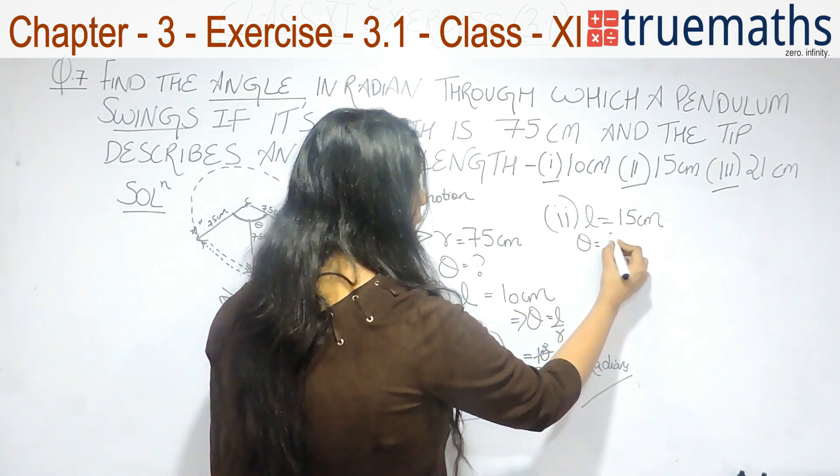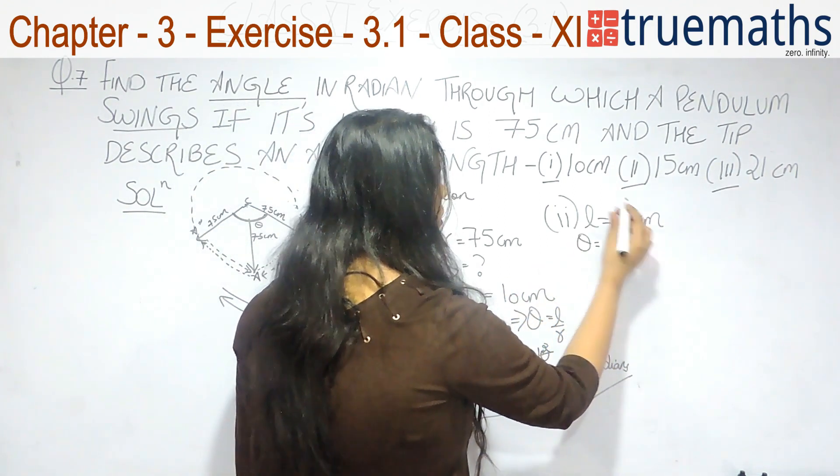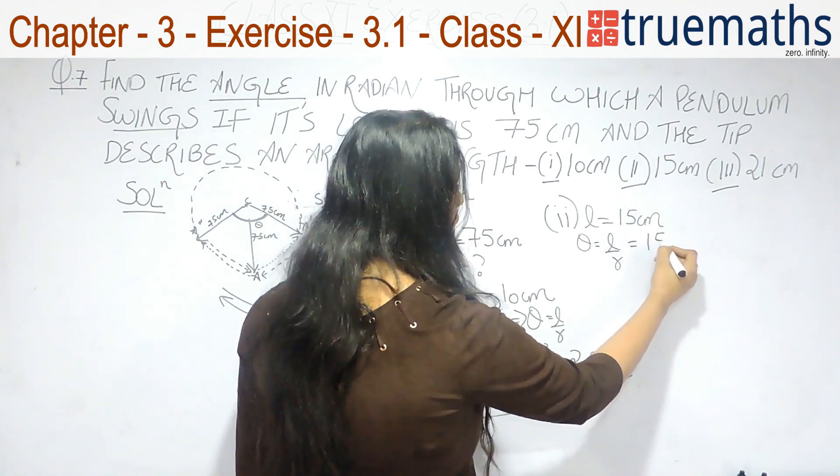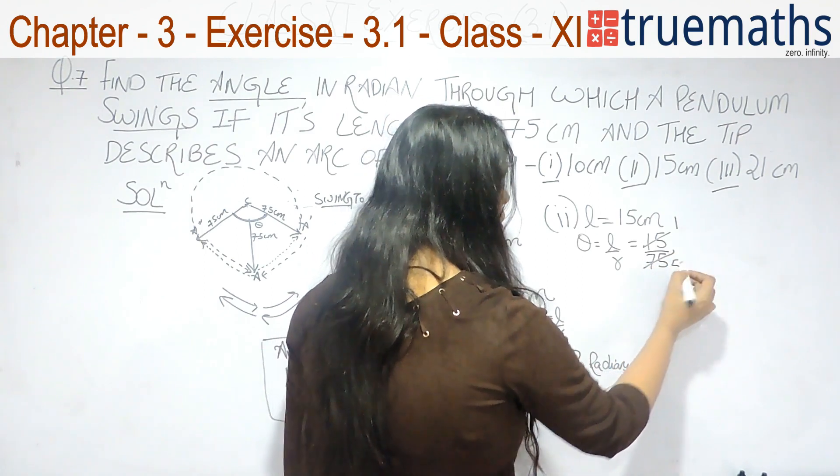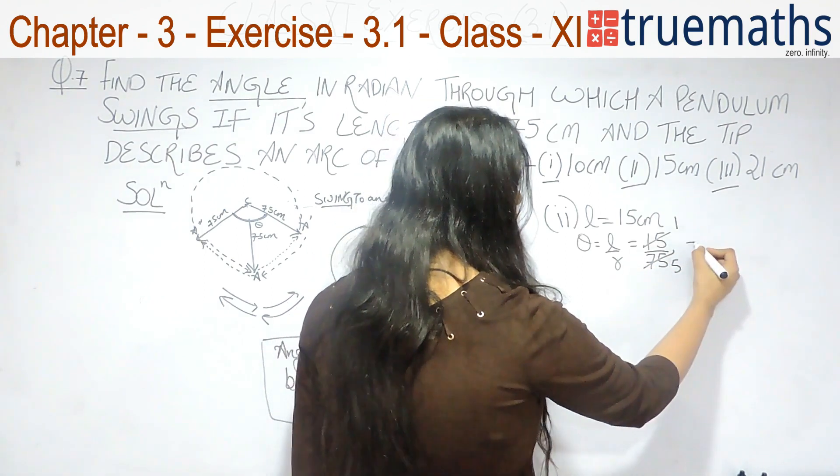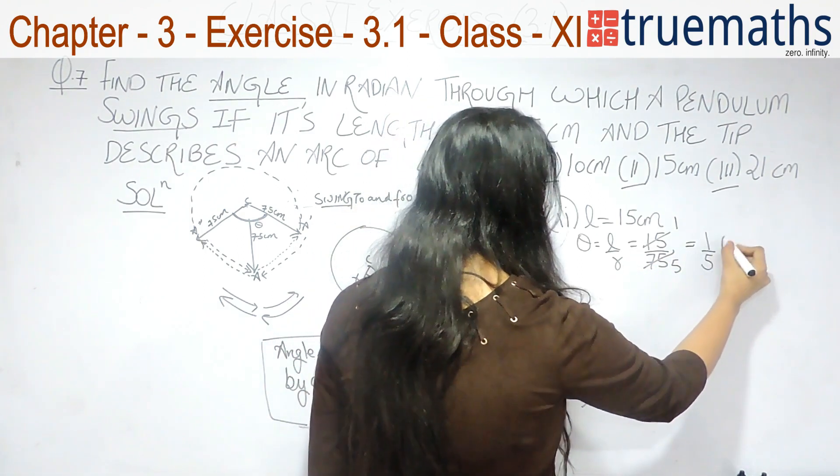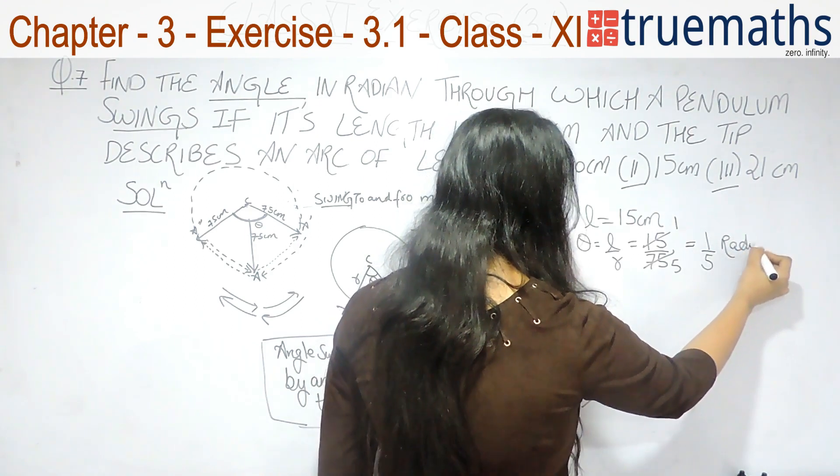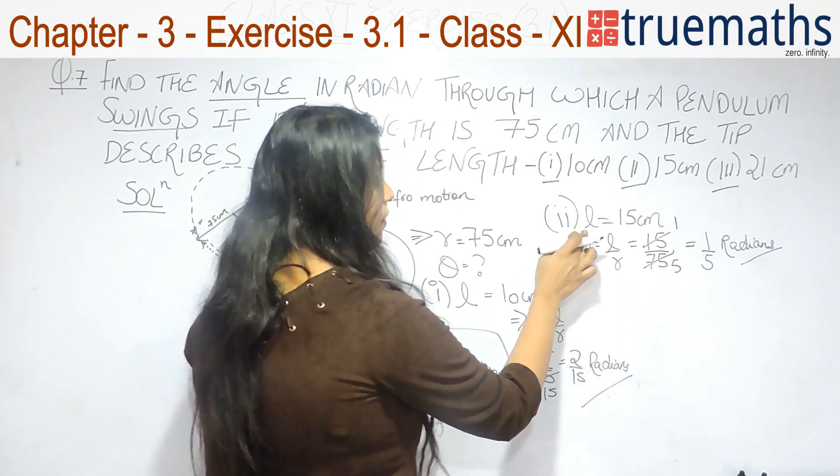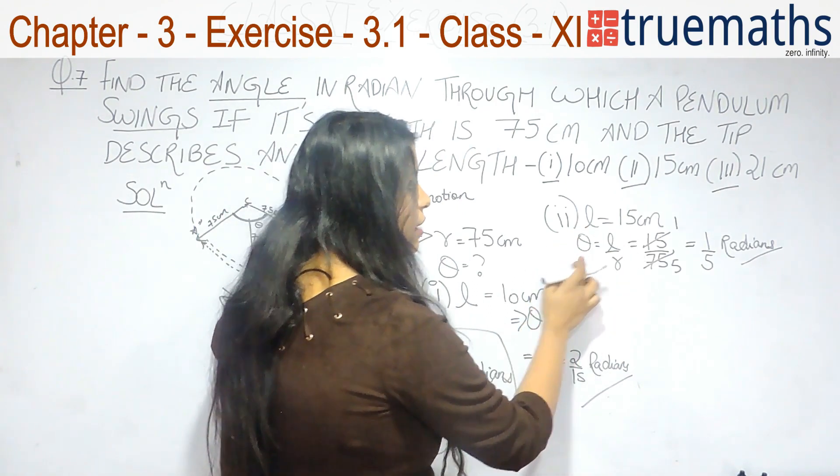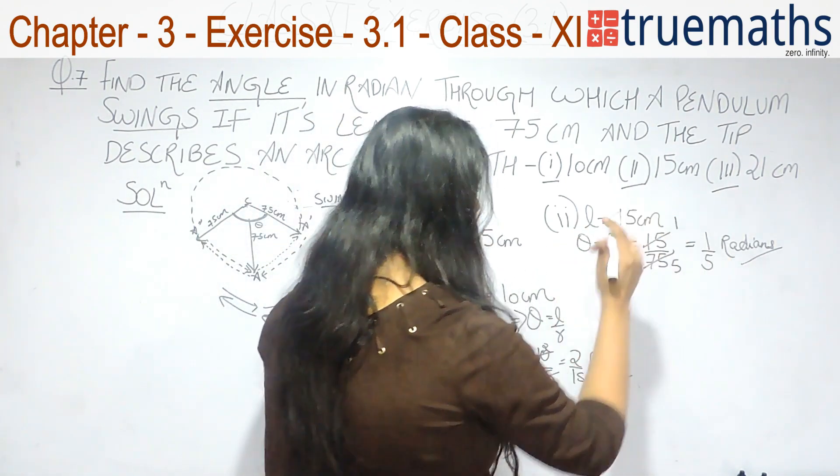So, your theta will be L by R. That is, L is 15 and radius is 75. So, 1 by 5 radian is your answer for second part. That is, when L is 15 cm, theta will be 1 by 5 radians.